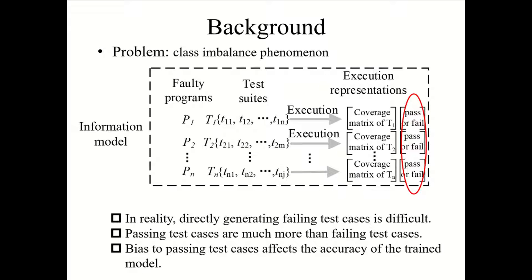However, it is difficult to construct failing test cases in practice. Therefore, the number of passing test cases is much greater than that of failing test cases. This leads to the class imbalance problem and bias toward features learned from passing test cases. The class imbalance problem in the training set causes a negative impact on the classifier, and it will affect the accuracy of the fault localization model.